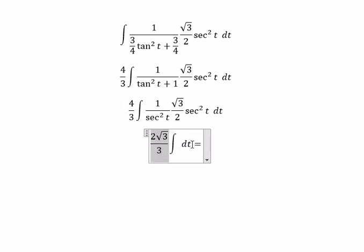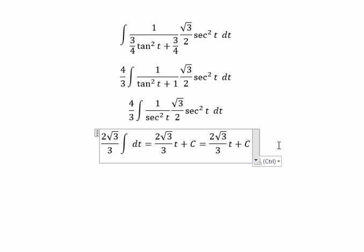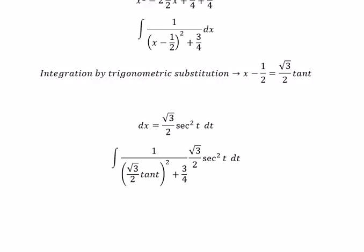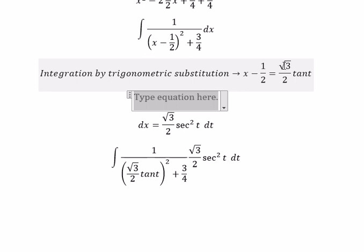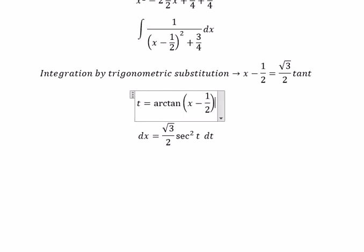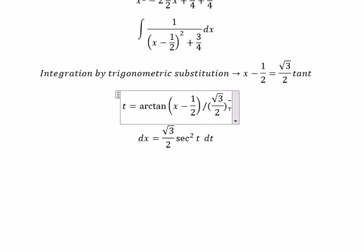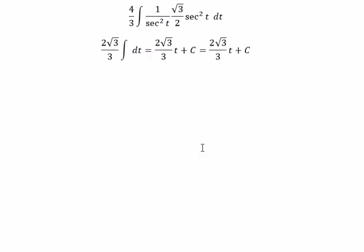For t, we need to change back to x. We have t equals arctan of x minus 1 over 2 divided by the square root of 3 over 2. We divide both sides with the square root of 3 over 2. So we put this expression back in here.